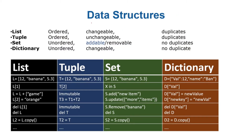Continuing from the previous video where we talked about data structures, let's go to the Jupyter notebook and see how a list, tuple, set, and dictionary can be defined or declared in Python. We will then compare how to access elements, insert more elements, and see comparisons of all these data structures operation by operation.